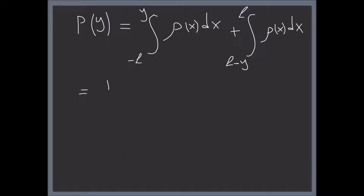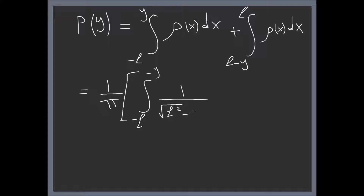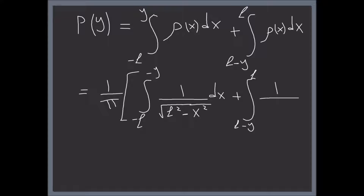We have one over π — this is from questions one, two, and three; if you've watched those videos you'll know what we're referring to — times the integral from negative L to negative Y of one divided by the square root of (L squared minus X squared), plus the integral from (L minus Y) to L of one divided by the square root of (L squared minus X squared) dX.